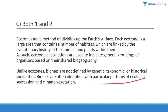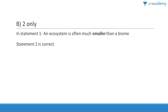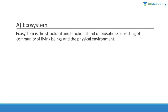Question five: An ecosystem is often much larger than a biome — that is wrong. A biome is made up of many similar ecosystems — that is correct. Answer is B, two only. An ecosystem is much smaller than a biome. Question six: The structural and functional unit of a biosphere is the ecosystem. Just remember question one and half your doubts will be solved. An ecosystem is the structural and functional unit of the biosphere, consisting of a community of living beings and the abiotic environment.